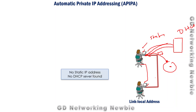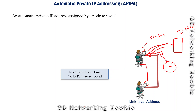Now let's say the network administrator is not going to assign a static IP address, and there is no DHCP server available — or there is a problem with the DHCP server so the client cannot get an IP address. In that case, these nodes can assign themselves an automatically generated random IP address and use it to communicate with each other.